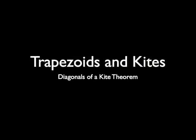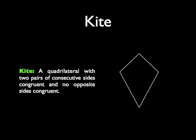Our final type of special quadrilateral is a kite. So let's talk about kites now. A kite is a quadrilateral with two pairs of consecutive sides congruent and no opposite sides congruent.